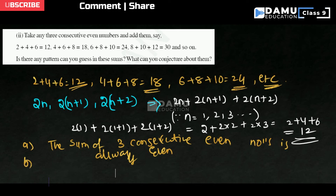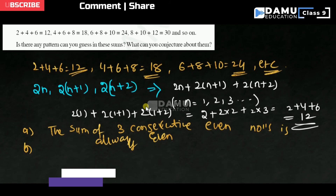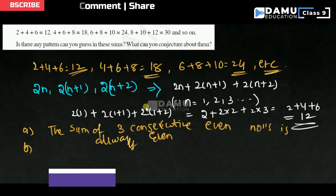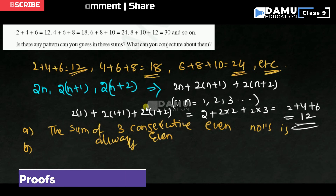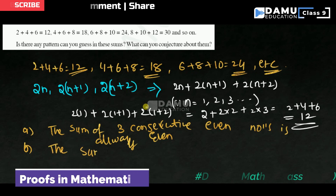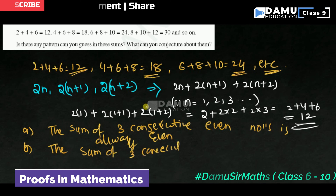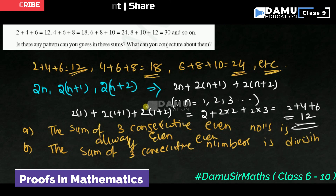Next, the sum of any 3 consecutive even numbers is always divisible by 3. So 12, 18, 24 — these are all multiples of 3. The sum of 3 consecutive even numbers is divisible by 3.